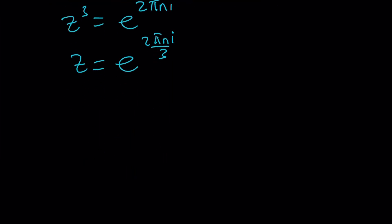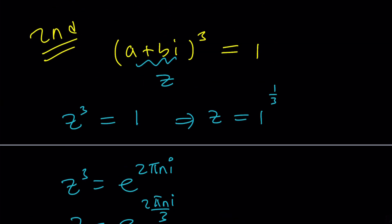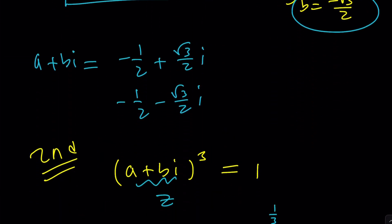We're going to get 3 z values. If n is equal to 0, we're going to get z equals 1. If n is equal to 1, we're going to get z equals e to the power 2 pi i over 3. If n is equal to 2, we're going to get z equals e to the power 4 pi i over 3. And when you expand these using Euler's formula, you're going to get all the solutions that we found earlier, including one.